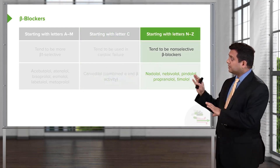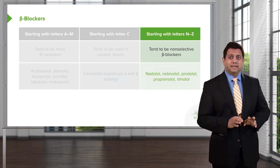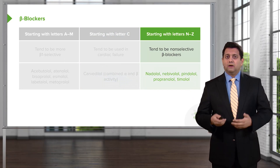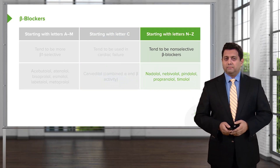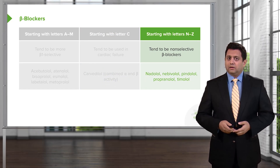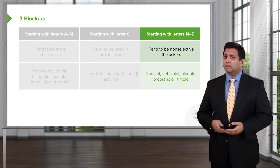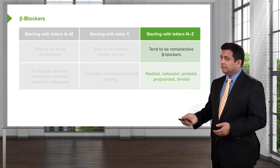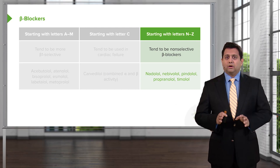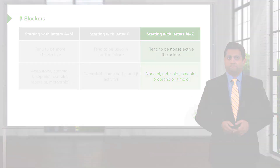Beta blockers that start with letters N to Z tend to be non-selective beta blockers. Examples include nadolol, nebivolol, pindolol, propranolol, and timolol — these are all non-selective beta blockers.